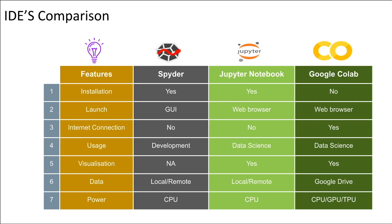The last feature is on the power side. Spyder and Jupyter Notebook are limited in terms of the CPU or GPU power available in your desktop or laptop. Whereas Google Colab has unlimited power available in terms of CPU, GPU, and TPU. GPU stands for Graphical Processing Unit and TPU stands for Tensor Processing Unit. We will discuss more on GPU and TPU in our future section on neural networks and artificial intelligence, but for now you can understand that they are faster and do more heavy lifting on the neural network and AI side.